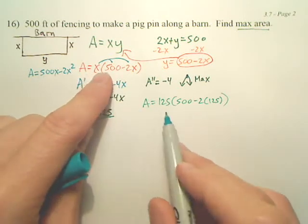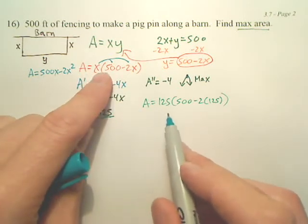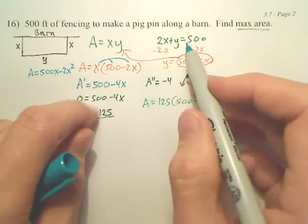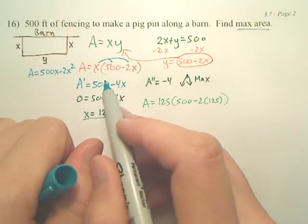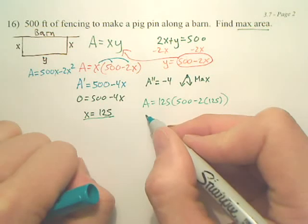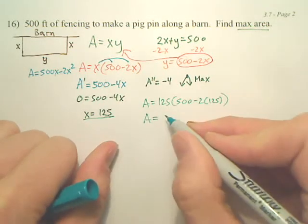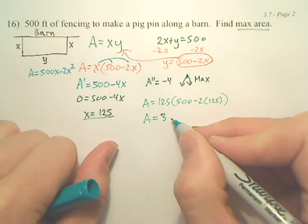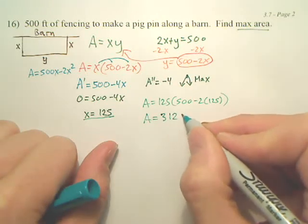You guys see that? Your new equation, can't you just go plug it in there and find your maximum area? Or could you plug it in here and then go back and plug it in here? And when you do all this math, what do you get for your area? 31,000? 250?